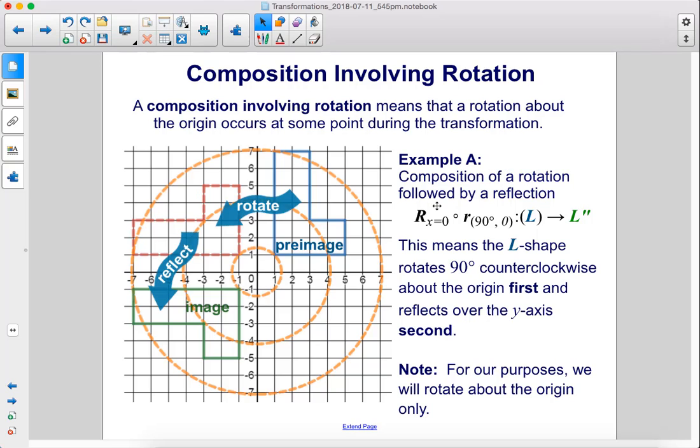For example, here's a composition of a rotation followed by a reflection. We have the rotation here and then the reflection there. This means the L shape rotates 90 degrees counterclockwise about the origin first and then reflects over the y-axis second.